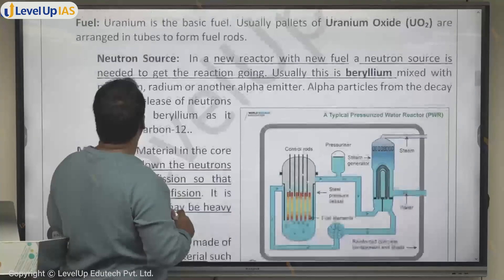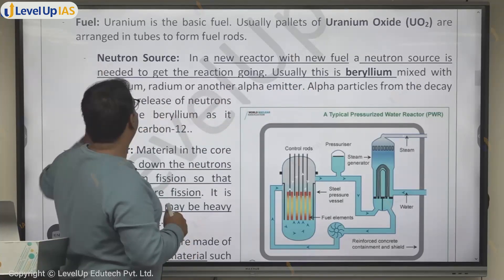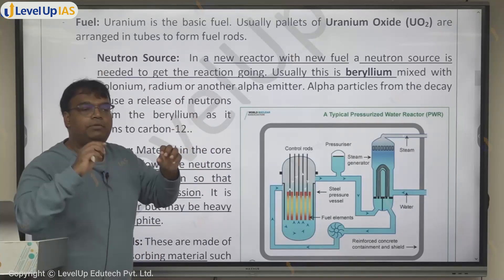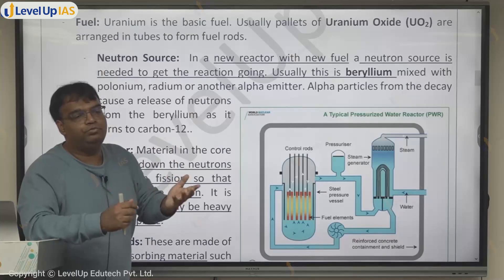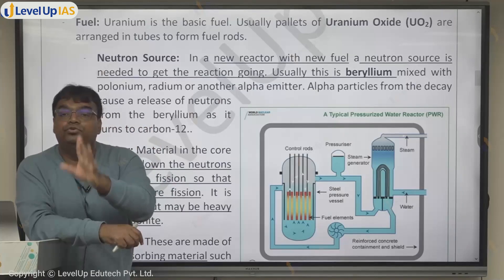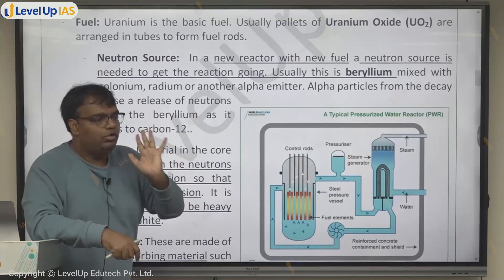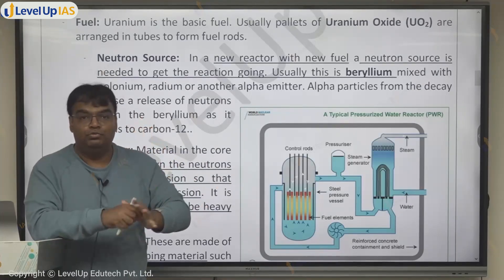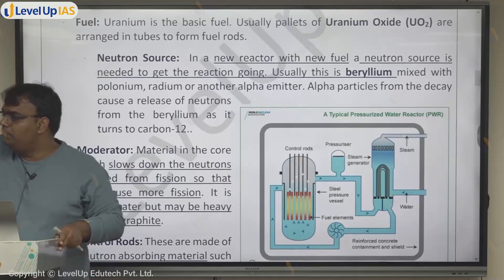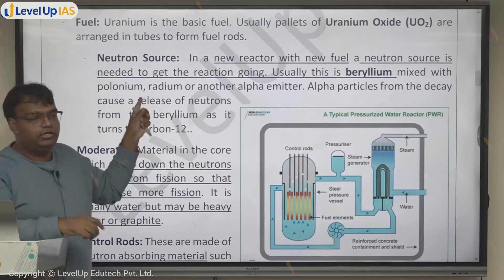For the neutron source, we can use beryllium mixed with an alpha emitter. Polonium or radium will emit alpha particles. The alpha particle will interact with beryllium to produce a neutron. In exam questions, which of the following is used as a neutron source? Answer: beryllium mixed with an alpha emitter — polonium or radium. This is only needed in a new reactor; in an existing reactor, neutrons are already being produced from the uranium reaction.